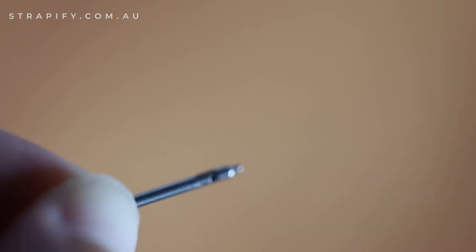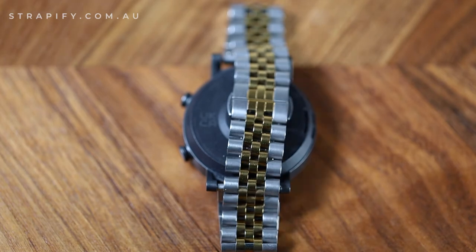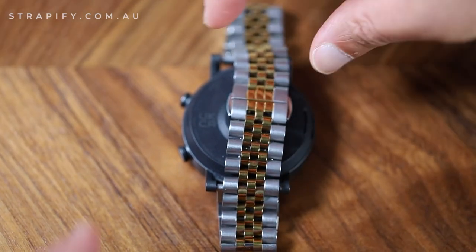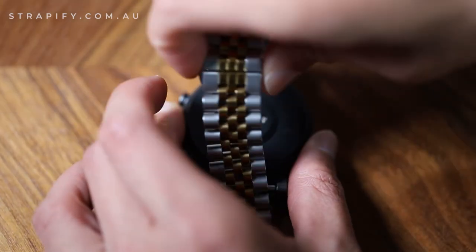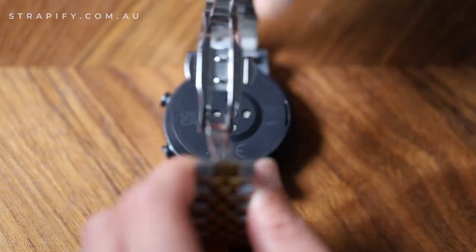Now we've got a metal bracelet on our watch. The first step is to open up the bracelet so that we get some extra room to work with.